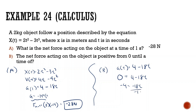Dividing both sides by −18: t = 4/18 = 0.22 seconds. After this time, the acceleration — and net force — becomes negative.